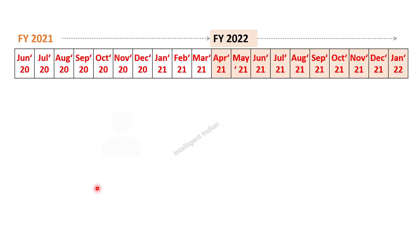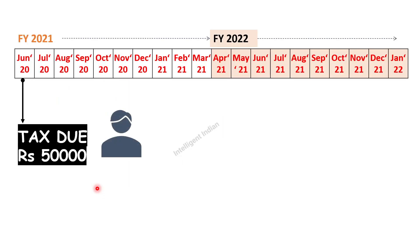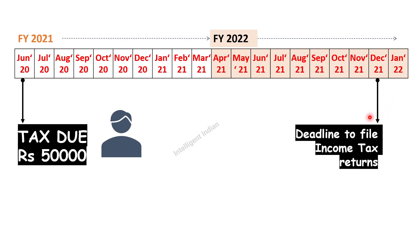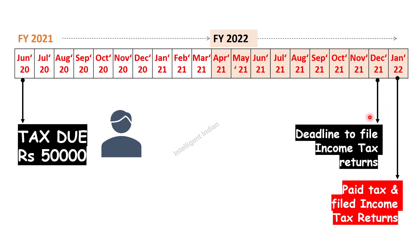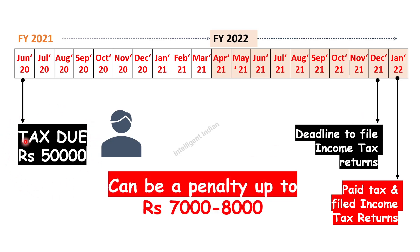Let me give you a simple example. Let's say there is a person A who needs to pay an advance tax of Rs 50,000 by June 2020, but the person does not pay any advance tax throughout the financial year, and also does not pay any self-assessment tax till December 2021 — the deadline to file income tax returns. If the person files income tax returns in January 2022 and pays the outstanding tax, the interest they need to pay on that Rs 50,000 is going to be around Rs 7,000 to Rs 8,000 depending on various calculations and multiple sections.